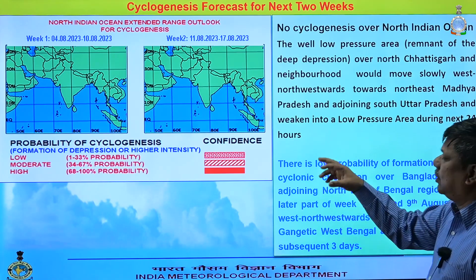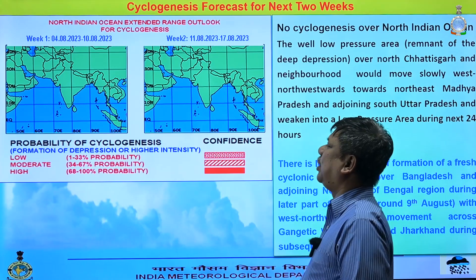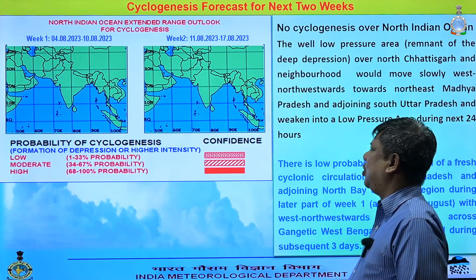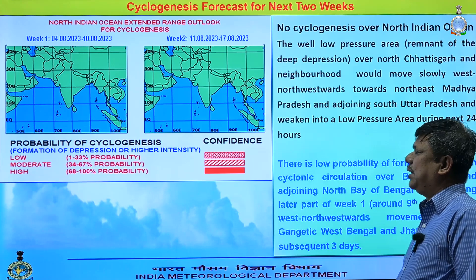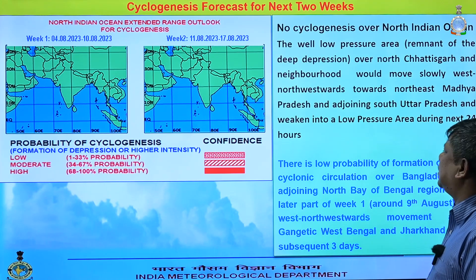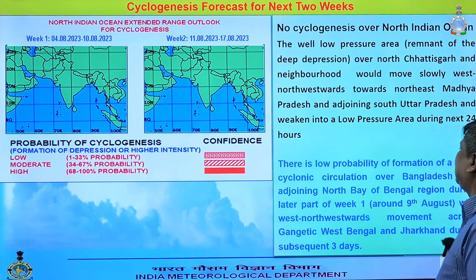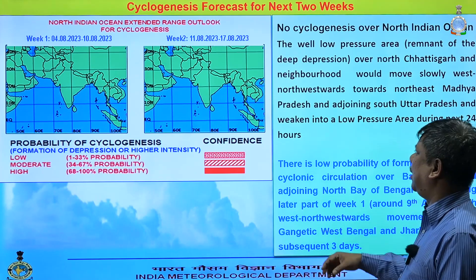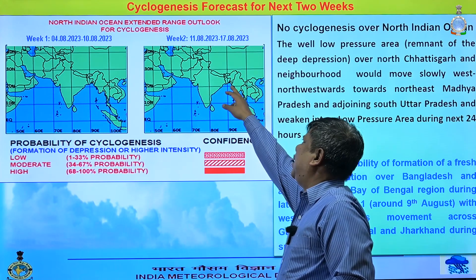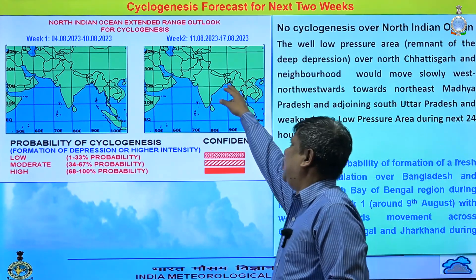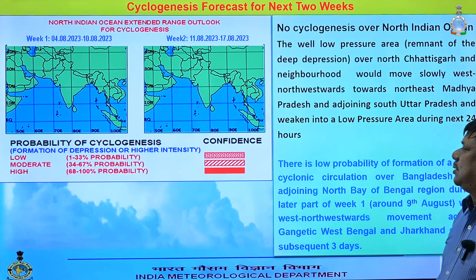For the cyclogenesis forecast for the next two weeks, there will be no new cyclogenesis. The current well-marked low pressure will persist over Madhya Pradesh and adjoining areas during Week 1. In the later part of the week, there is a low probability of formation of a fresh cyclonic circulation around the 9th, over the north Bay of Bengal and adjoining Maldives coast, which will gradually move west-northwestward towards Gangetic West Bengal, giving some weather over the next three days.